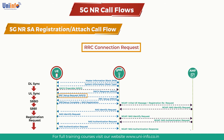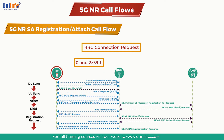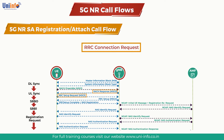RRC Connection Request is considered as Message 3 and it includes UE identity and establishment cause. The UE identity can be a random number between 0 and 2^39 - 1, and will be used for contention resolution by the UE while decoding Message 4 RRC Connection Setup. RRC Connection Request is sent on the uplink grant provided in Message 2 from the gNodeB, and over SRB0 on the Uplink Common Control Channel.